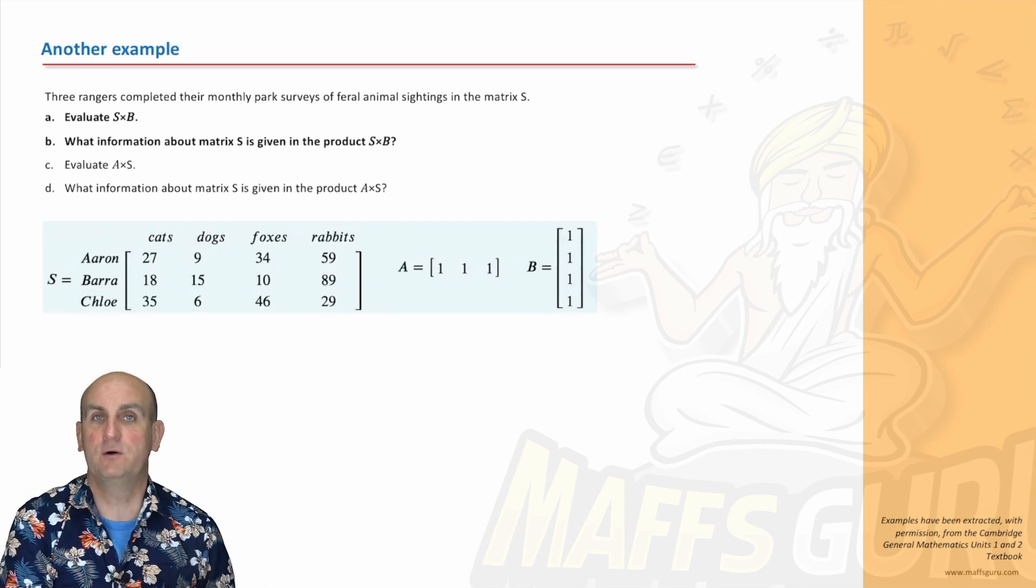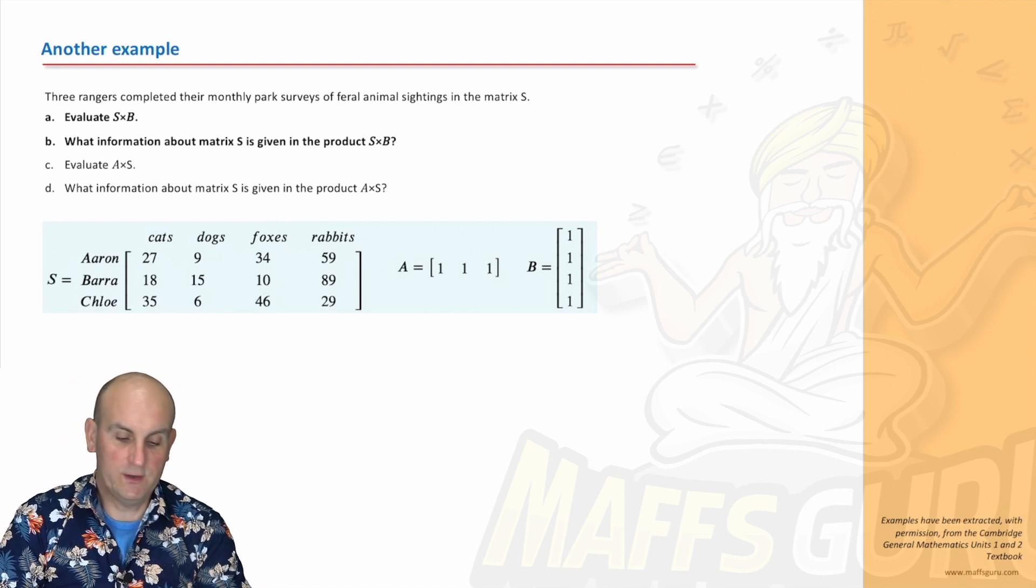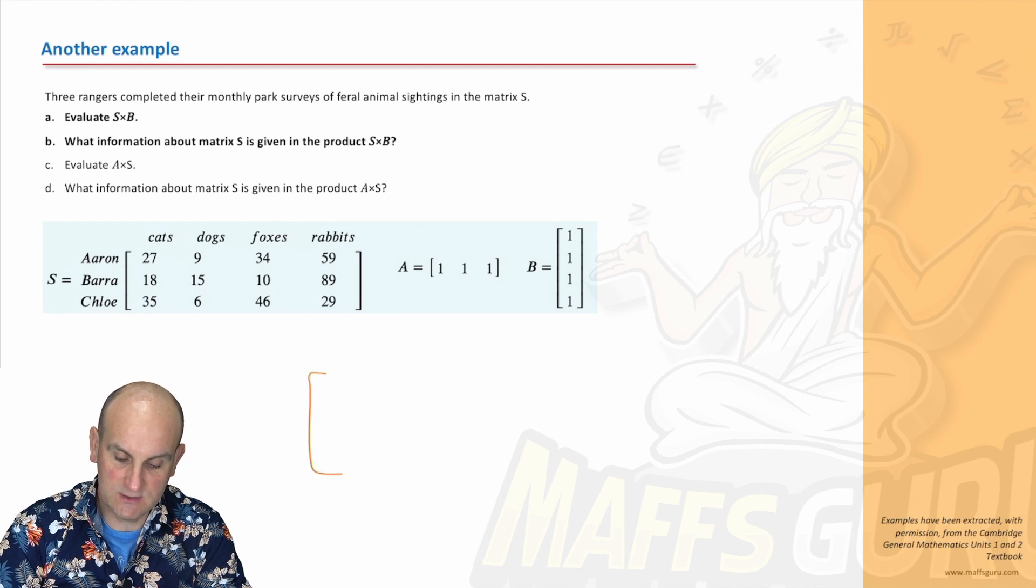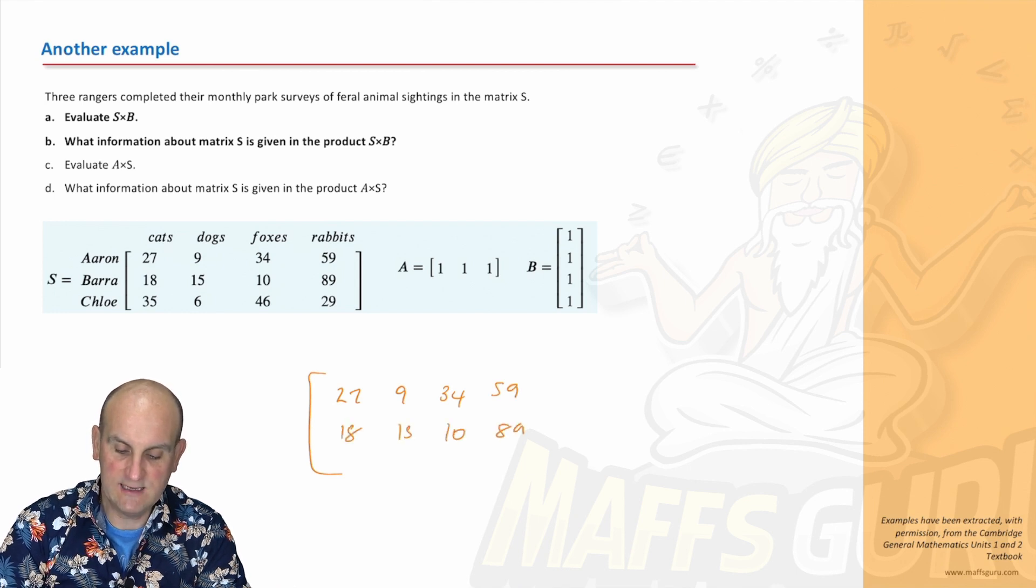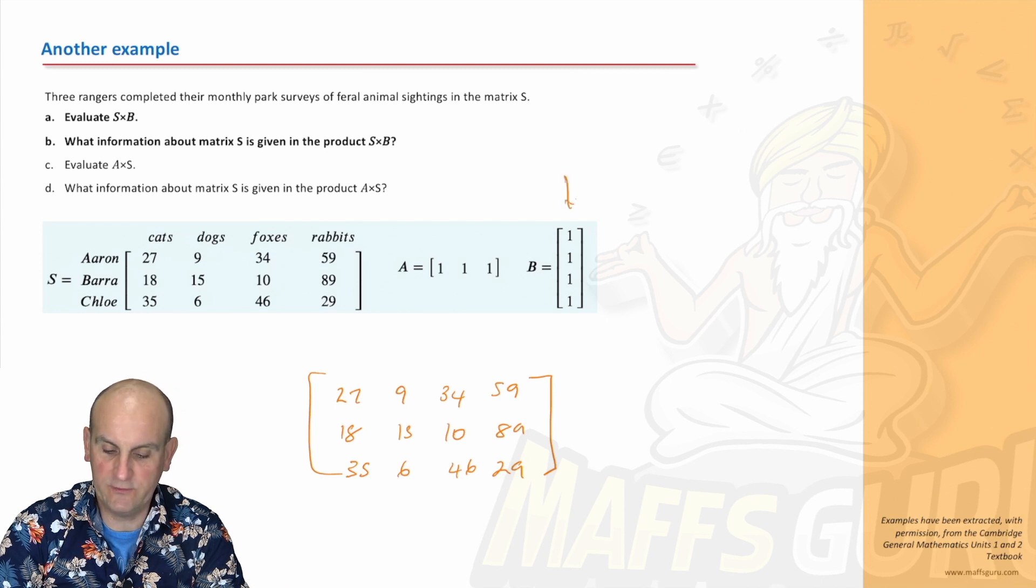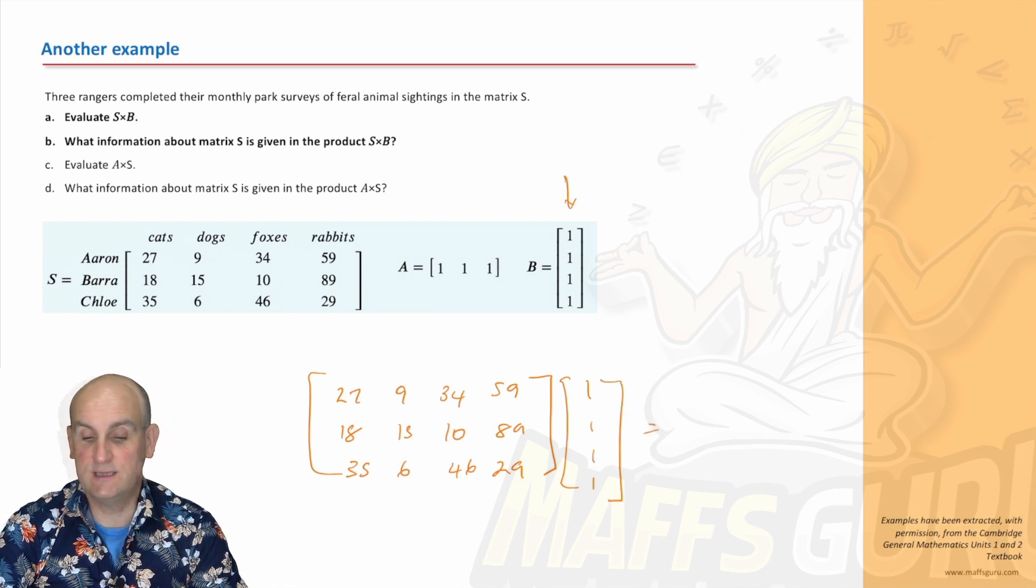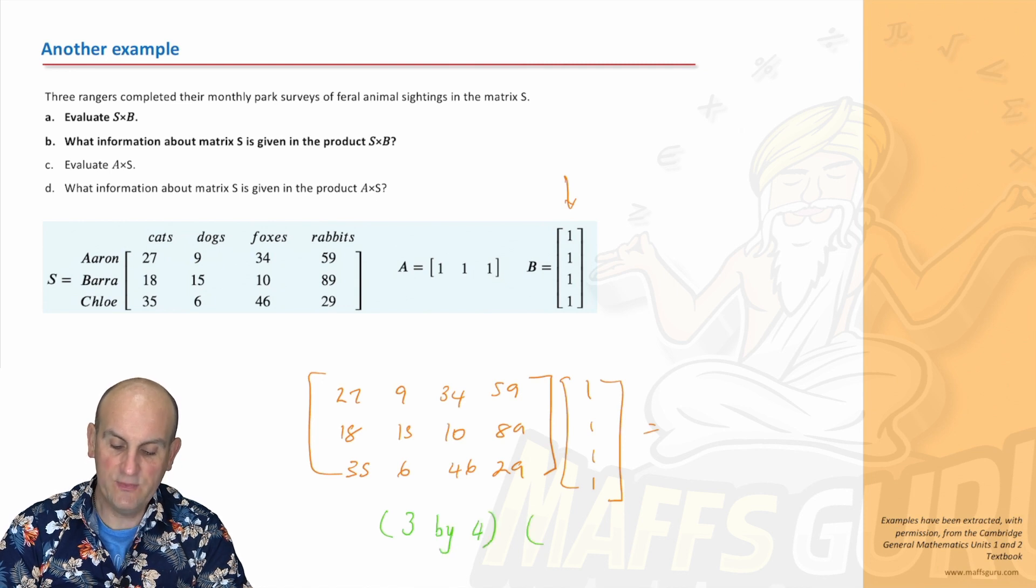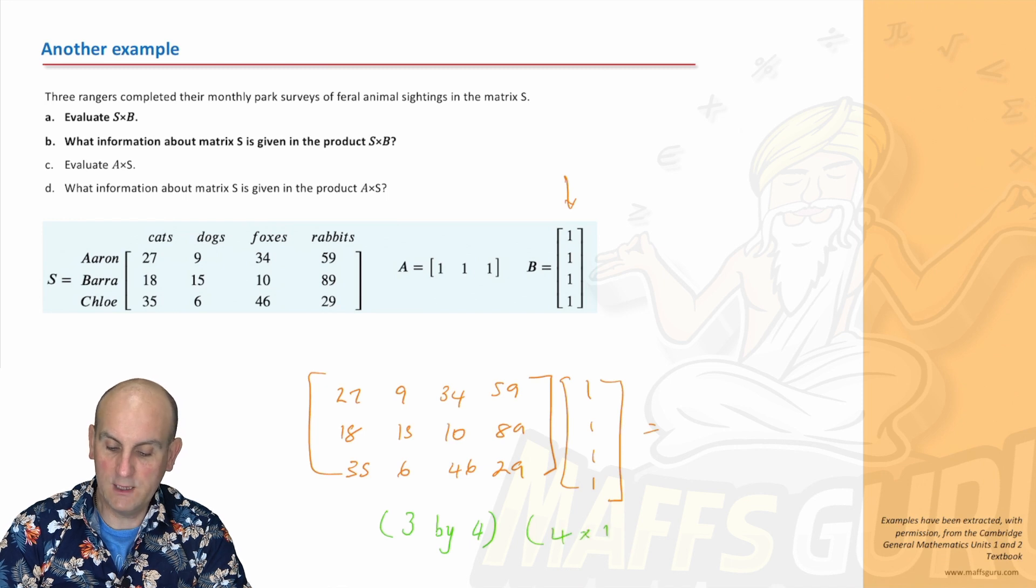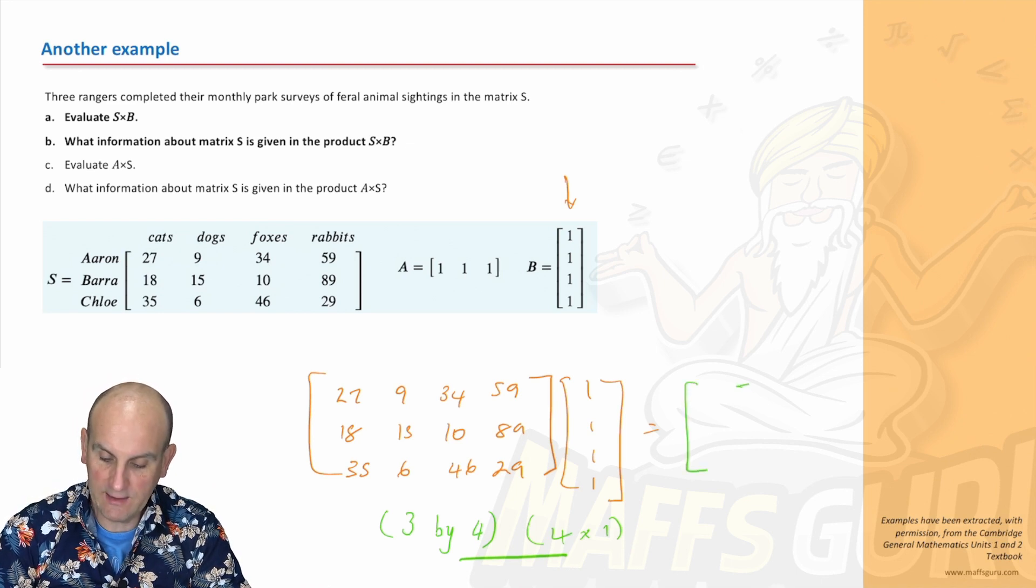Here is another example where we're going to multiply some matrices together and interpret what has come out. We've got S, A, and B. We're going to evaluate S times B. This is going to take some time to write out. We've got 27, 9, 34, 59, 18, 15, 10, 89, 35, 6, 46, and 29. So it's this one here, that is my column matrix of 1, 1, 1, and 1. Can I multiply these together? We need to make sure that our order is defined. 3 by 4 columns, and this is 4 by 1 column. Are those middle numbers the same? They are, which means we're going to end up with a 3 by 1.